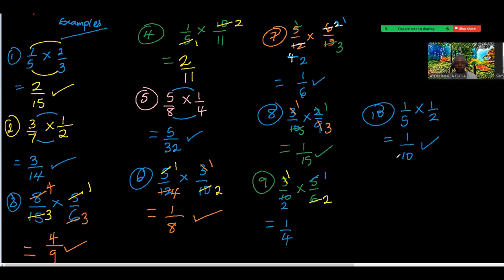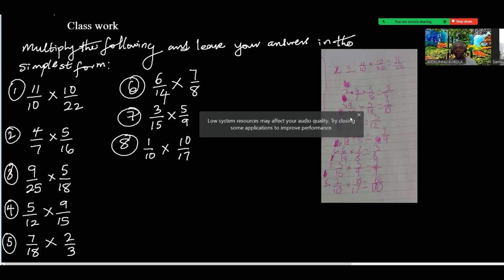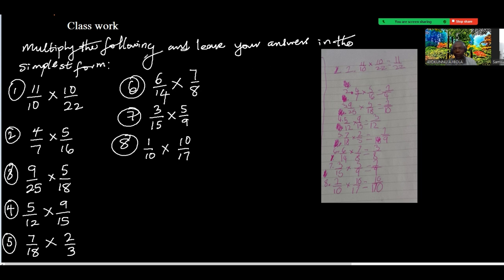Looking at your solution I discovered some things — you did not reduce most of them to lowest form. Let's look at number one: 11 over 10 times 10 over 22. You can divide by 10 first — that gives 11 over 22. Then divide 11 and 22 by 11 — that gives 1 over 2.